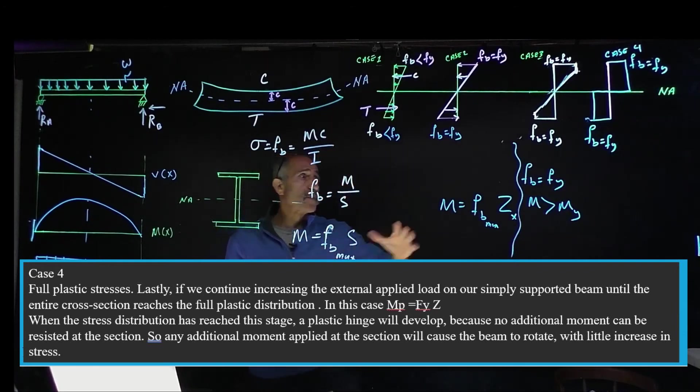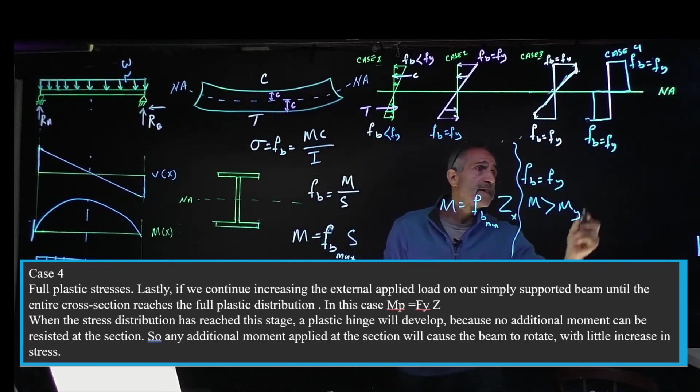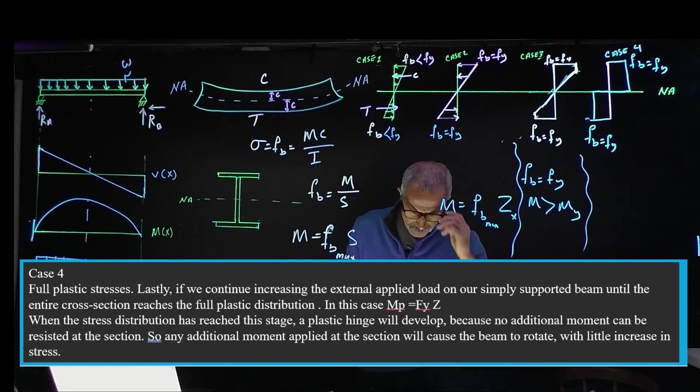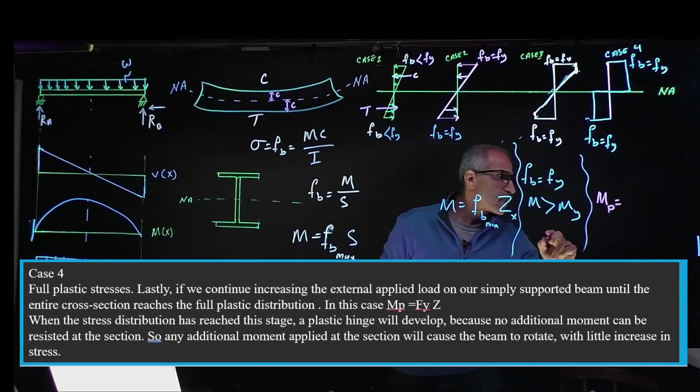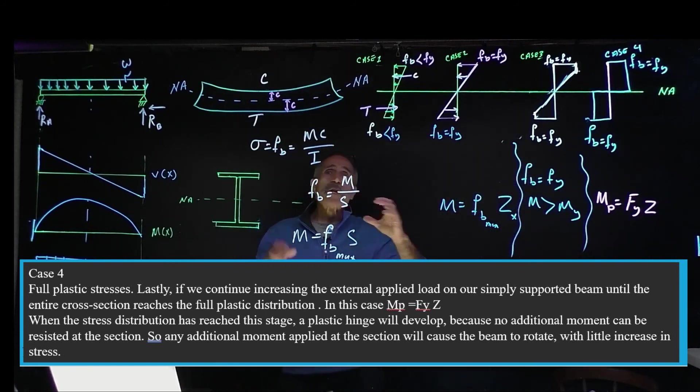This continues until we become entirely 100% plastic distribution achieved, and everything is going to look like that. In this case, we're going to have our moment equal to the plastic moment, which equals F_Y times Z.